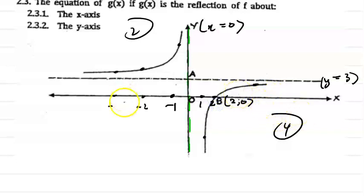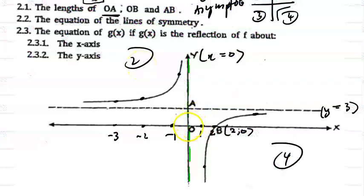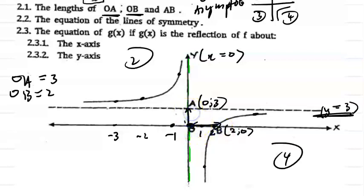Your theory is very important — make sure you understand it. Now they want the lengths of OA, OB, and AB. From O to A: A lies on the asymptote y equals 3, so the point A is (0, 3). Therefore OA is going to be 3 units. OB is going to be 2 units because B is the x-intercept — from the origin to there, the distance will be 2 units.